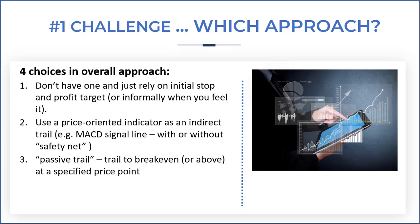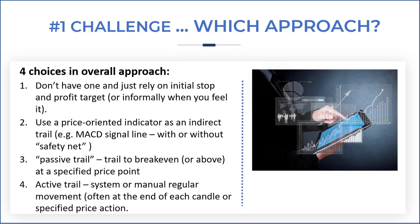The third option is what's termed a passive trail, where we trail to break even or above at a specified price point, and subsequently break even and the profit target remain our two potential exit points. Finally, what I would term an active trail is where we have a system or manual regular movement — often at the end of each candle or specified price action — that will mean we move our stop accordingly.